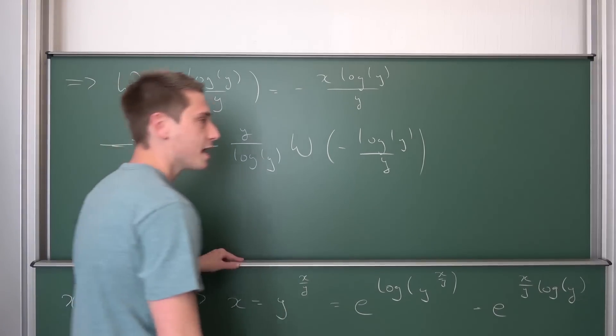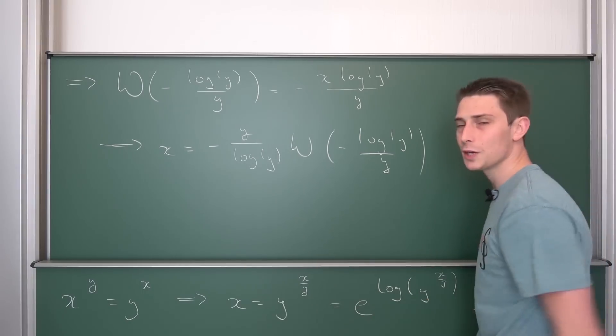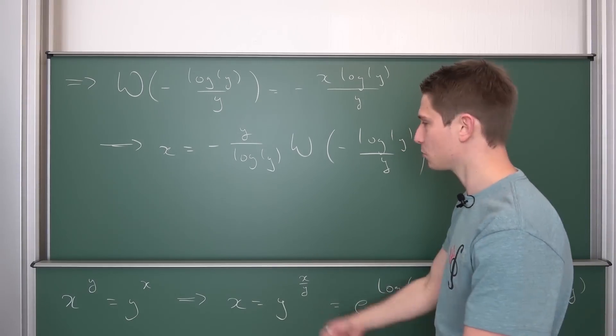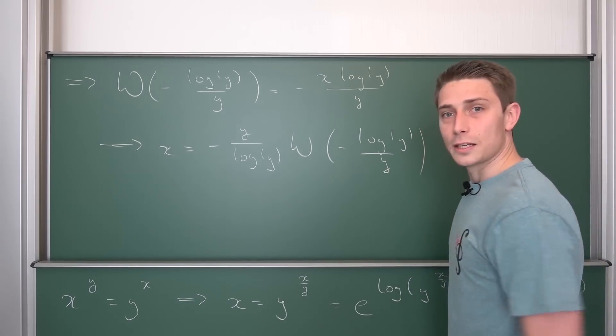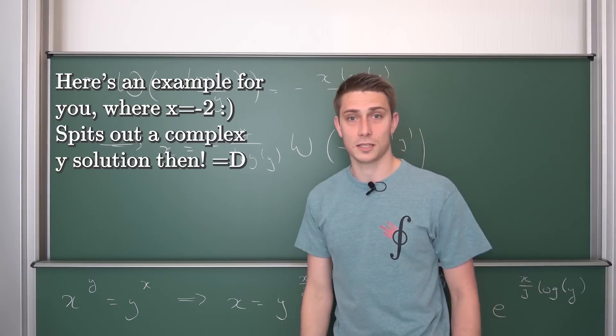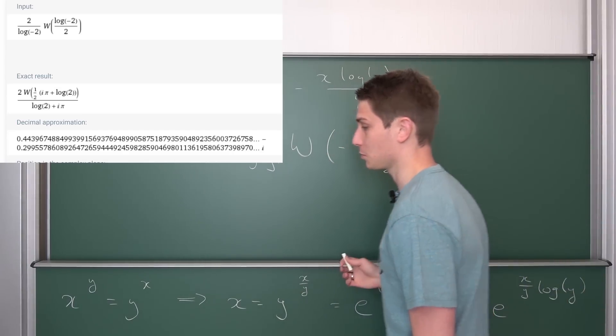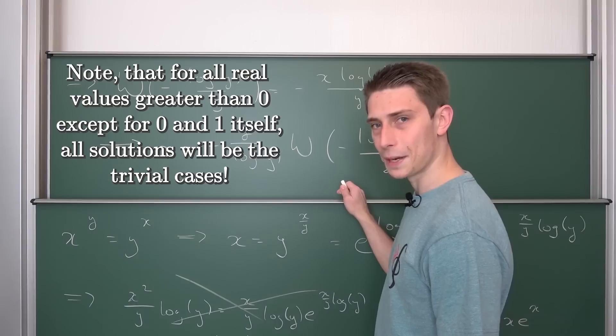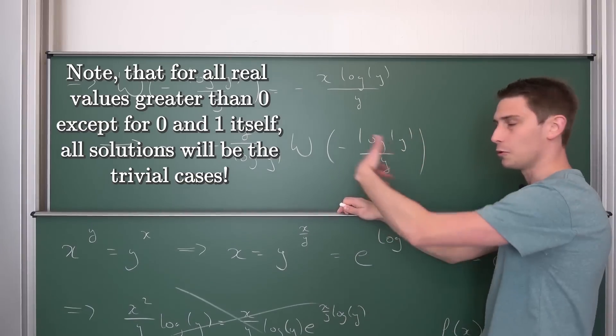Meaning, the solution to this thing right here is going to be negative y over log of y times Lambert W of negative log of y over y. And then we are done, mate. My buddy, that's amazing. What a weird freaking solution. But it is what it is. It works out. We got some negative signs here, mate. And this is it. Those are the solutions.